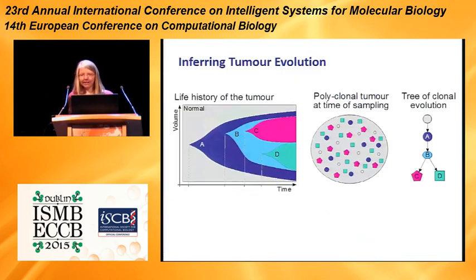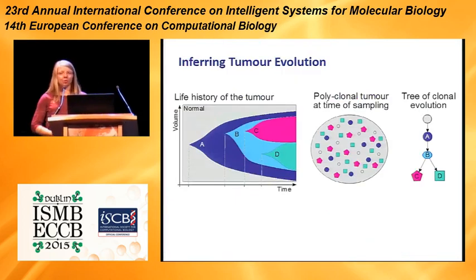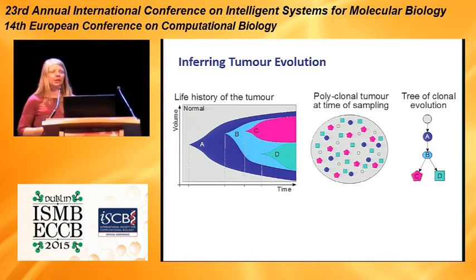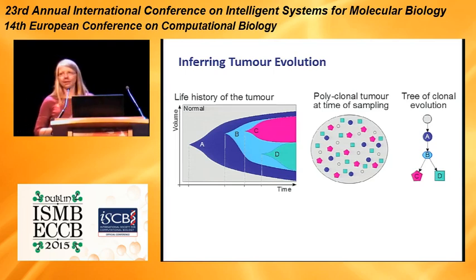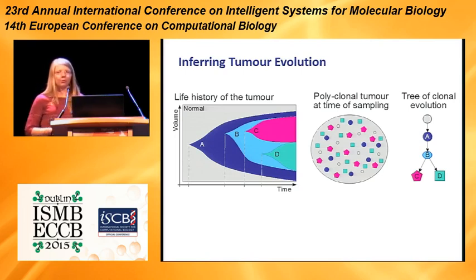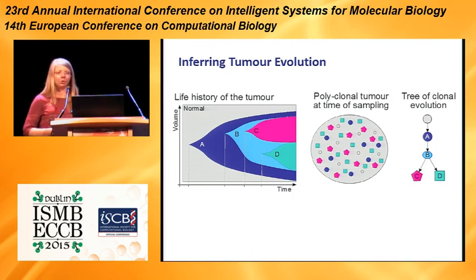As we've heard many times today already, tumor development is an evolutionary process. A cell acquires a mutation that confers a growth advantage, it starts to proliferate, and the descendants of the cell acquire even more mutations, so that over time a heterogeneous tumor evolves. However, the life history isn't something we can observe directly; instead, what we usually have is just a single snapshot of the tumor at the time of sampling. Nevertheless, the mutations encrypt the history of the tumor, and therefore we should be able to reconstruct the tree of clonal evolution.